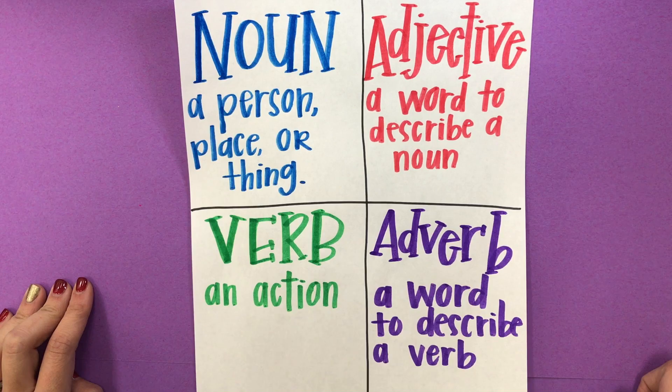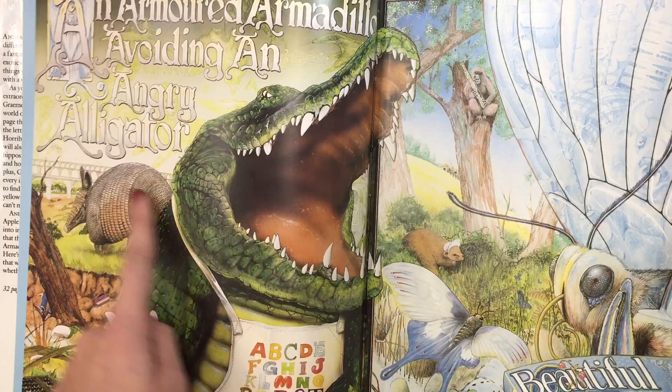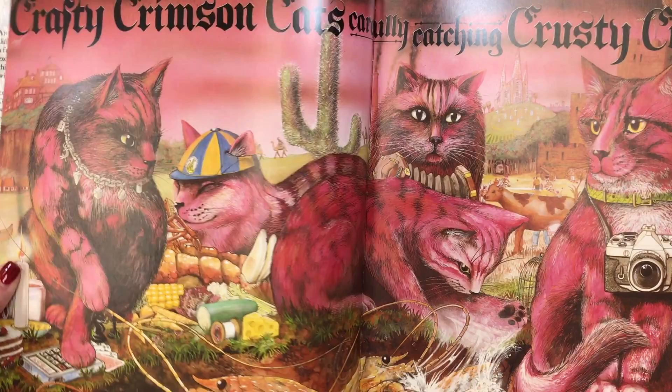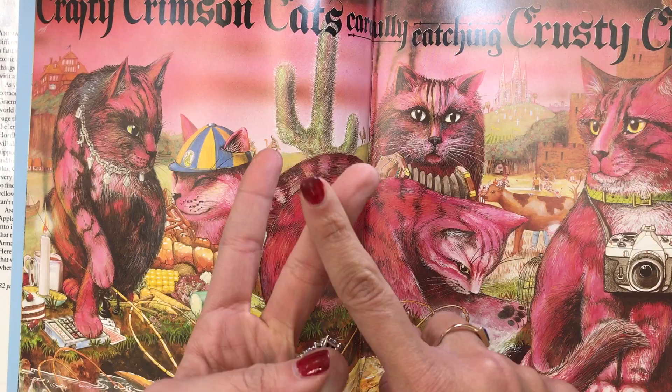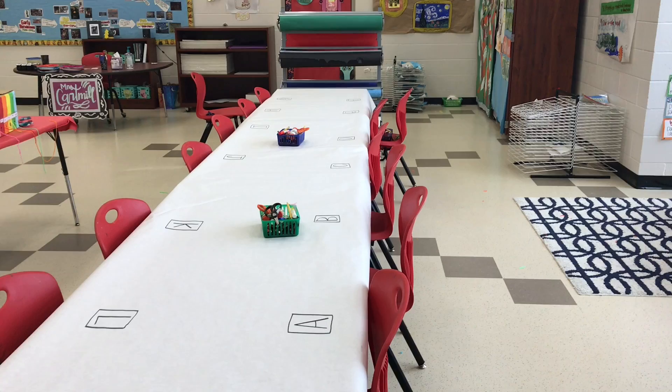As we turn through the pages of Animalia, you'll notice that these pages have all A's, all B's, all C's for their nouns, adjectives, verbs, and adverbs. Each person in class is going to get a letter. You are going to brainstorm today to think of all of your nouns, adjectives, verbs, and adverbs.